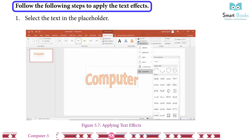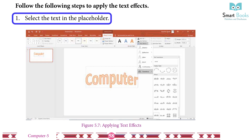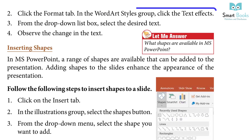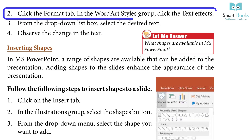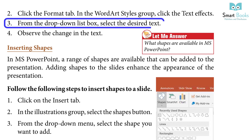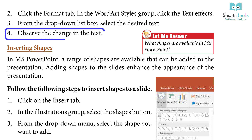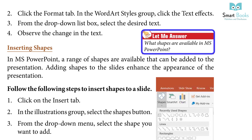To apply text effects: select the text in the placeholder, click the Format tab in the word art style group, click the text effect, from the drop-down list box select the desired text effect, and observe the change in the text.